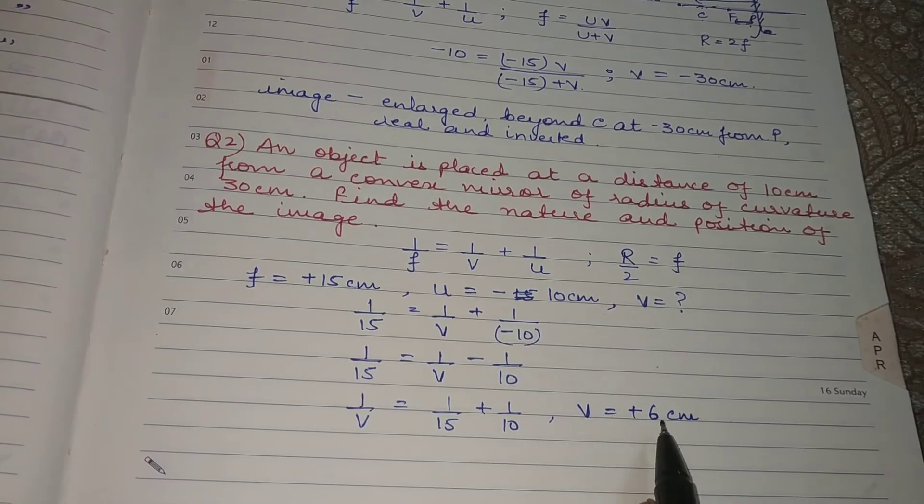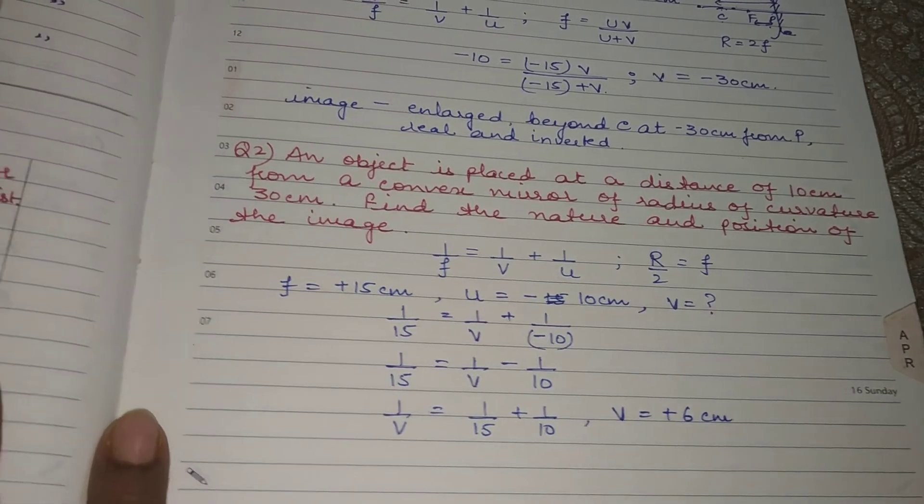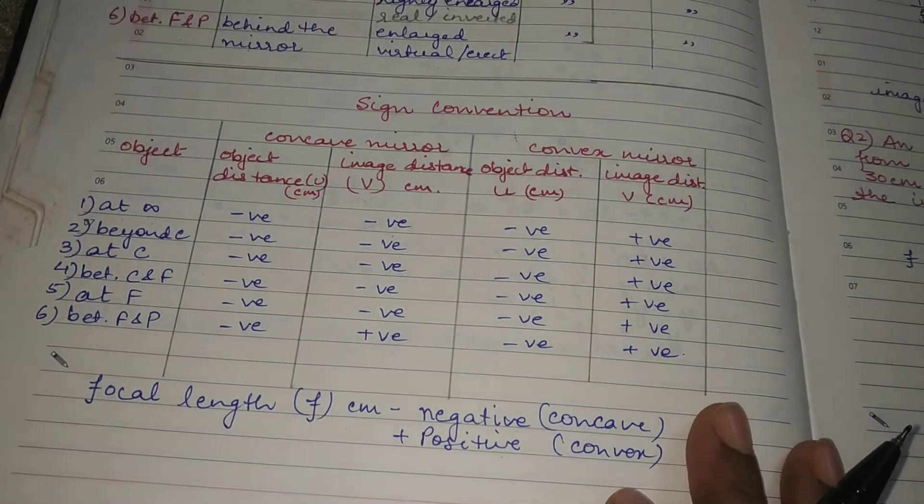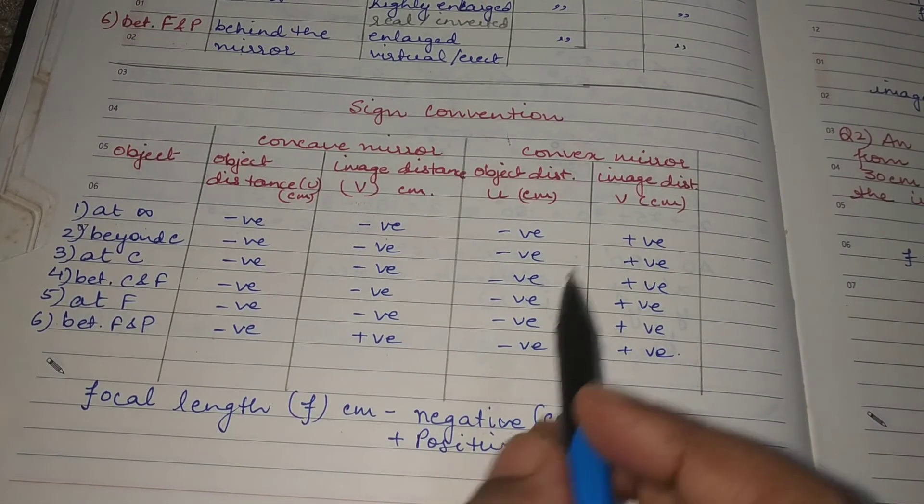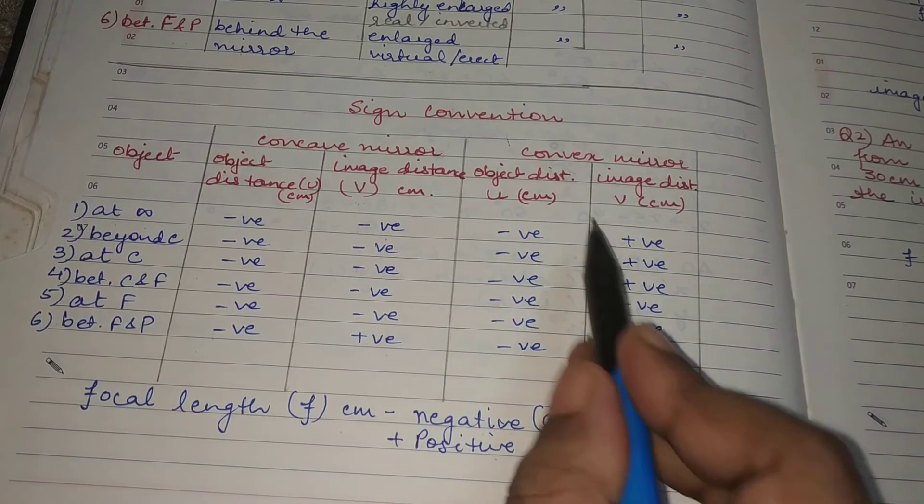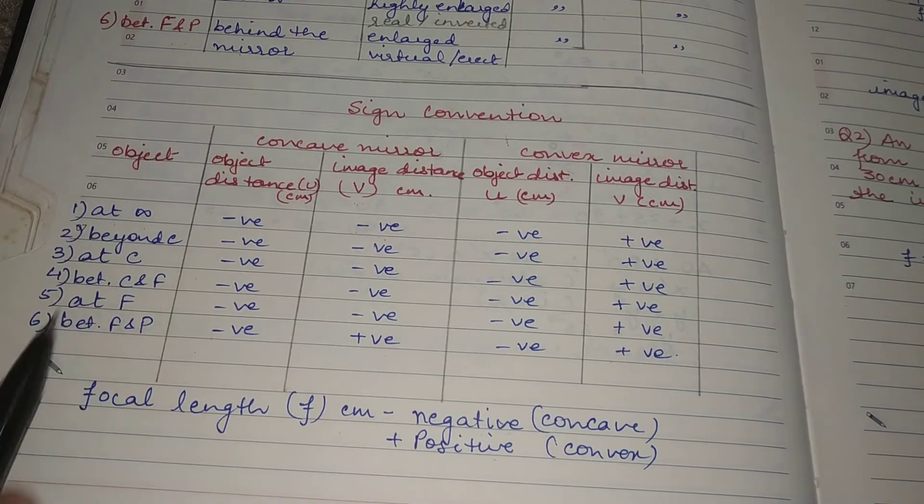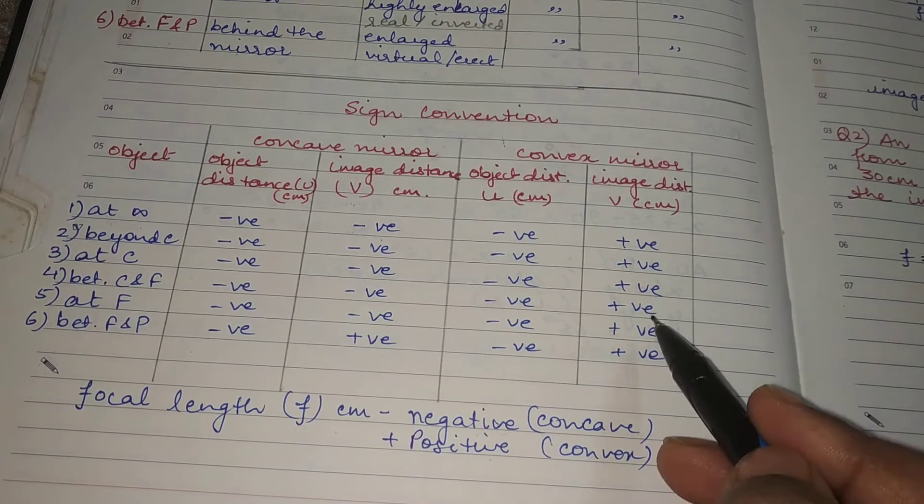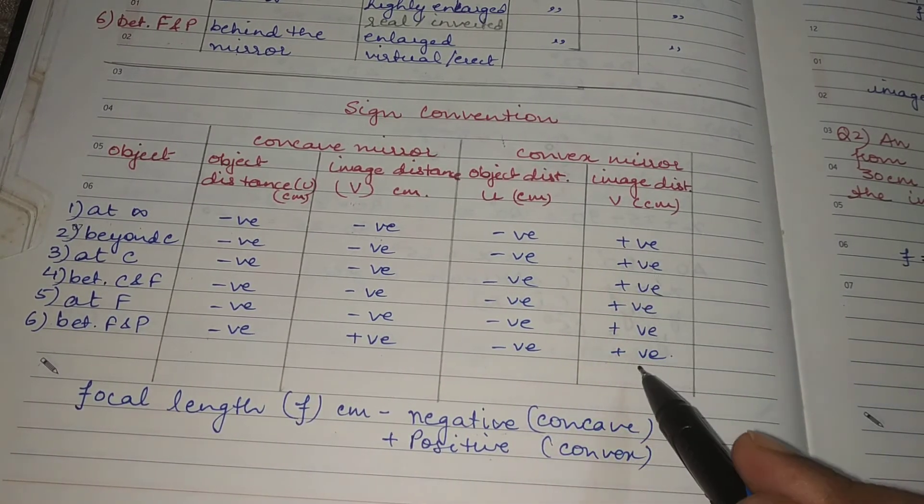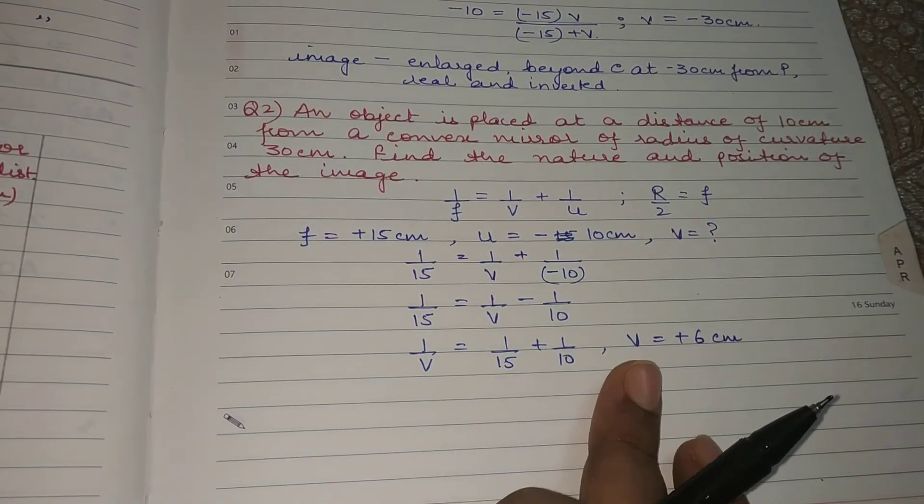Now this time the value of v will be positive. And if you remember according to this table which is based on sign convention, for all the positions of the object, all 6 positions for the object, we always get the image distance as positive. And this is what we have obtained in this question also.